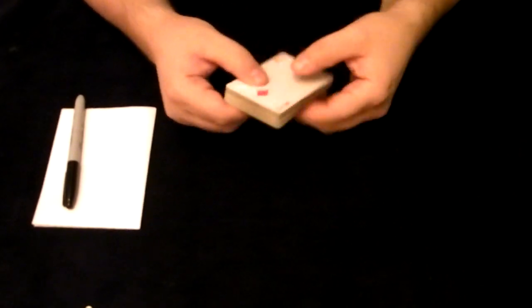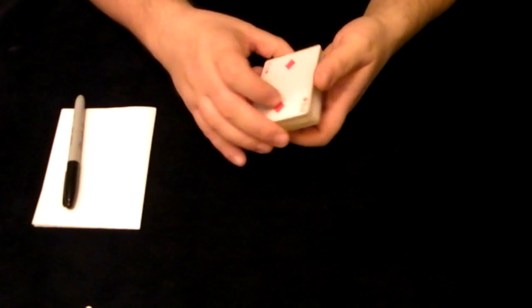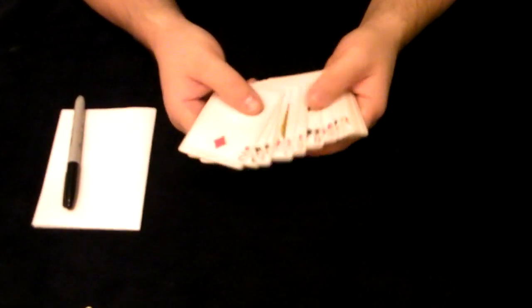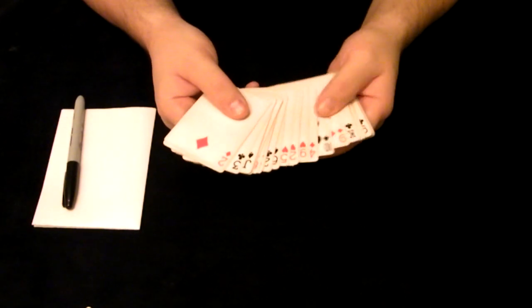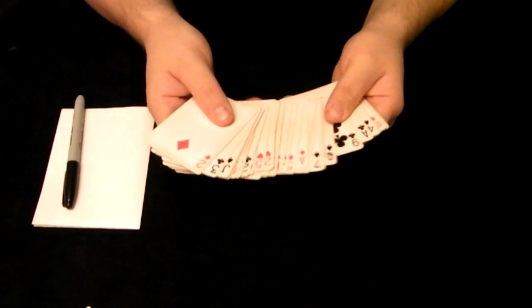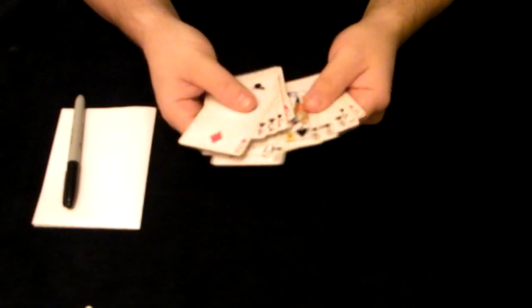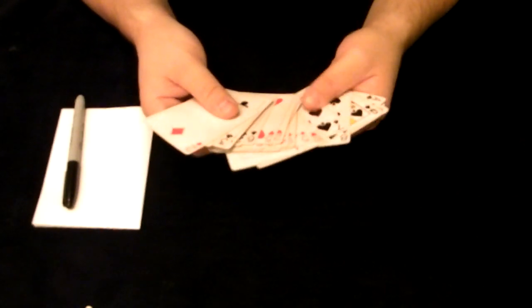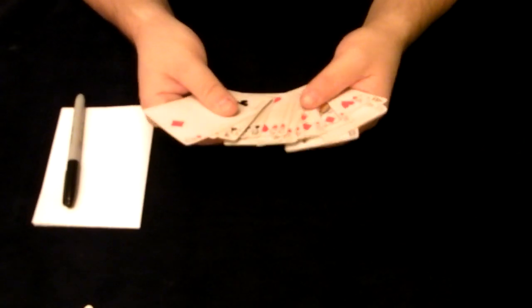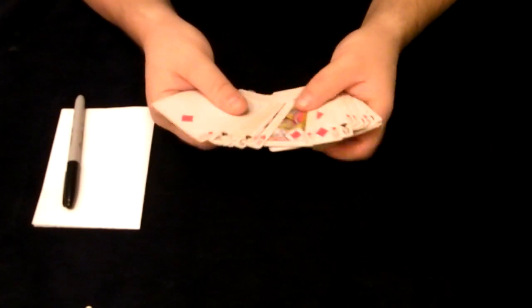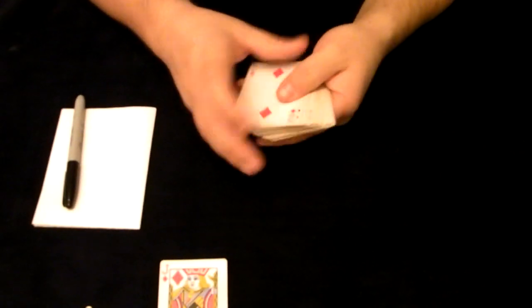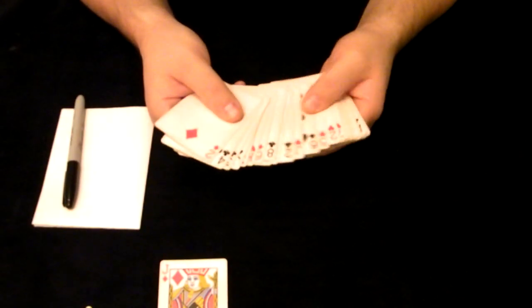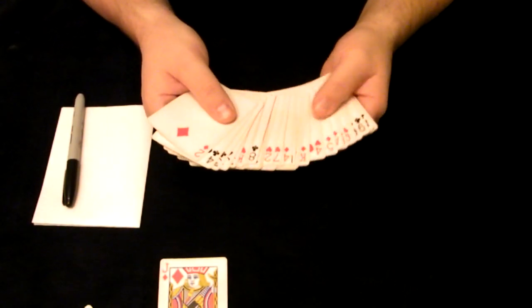Now, what we're going to do is we're going to hold the deck face up like this. And you're going to fancy the cards and just pull out any one of these cards. Make it a card that you feel will be a very lucky card. I'm going to say my lucky card is the Jack of Diamonds, so I'm going to set that there. It doesn't have to be the same card, of course. You just find your own personal lucky card and set it aside.